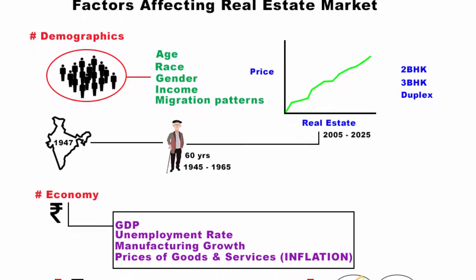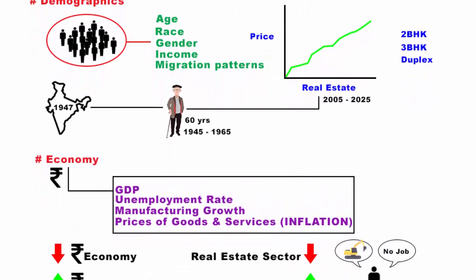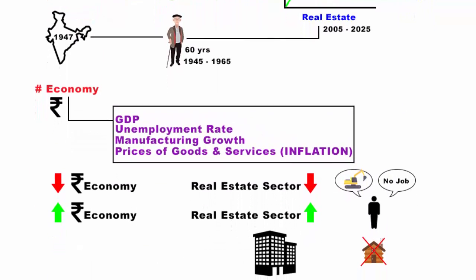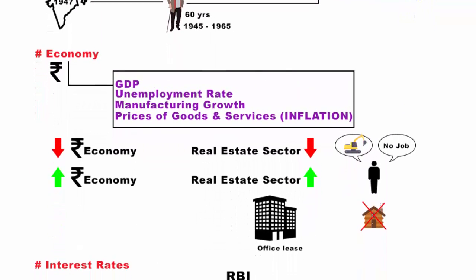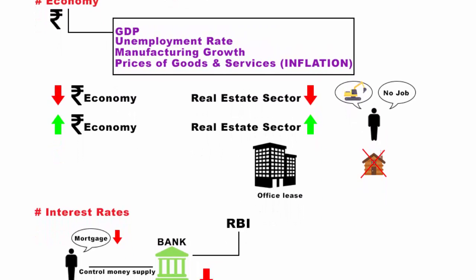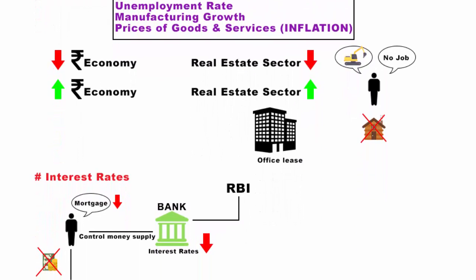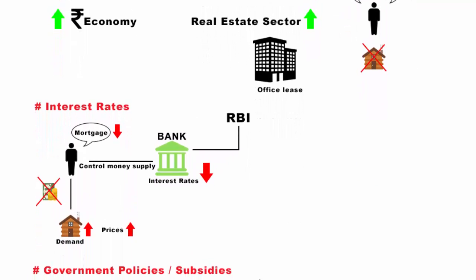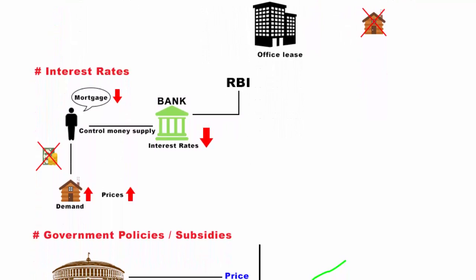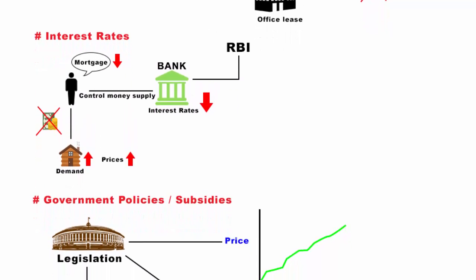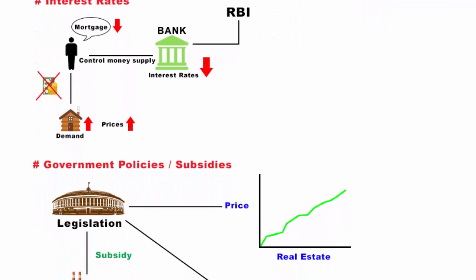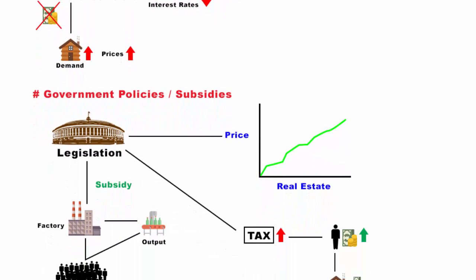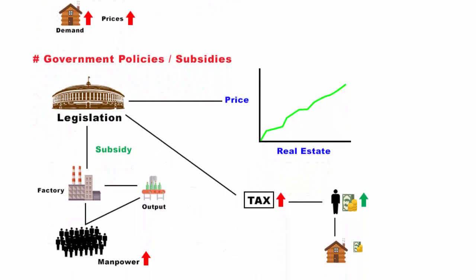So these were the four high-level factors that play a significant role affecting the real estate market — although there are more complex factors such as surrounding development of the location, availability of civic amenities, and other things. But these four factors give a clear-cut relationship between the market and demand. The purpose of this video is to give you an overall view of how these factors create a certain type of market demand for the real estate sector. I hope you found this video informative. Thanks for watching.